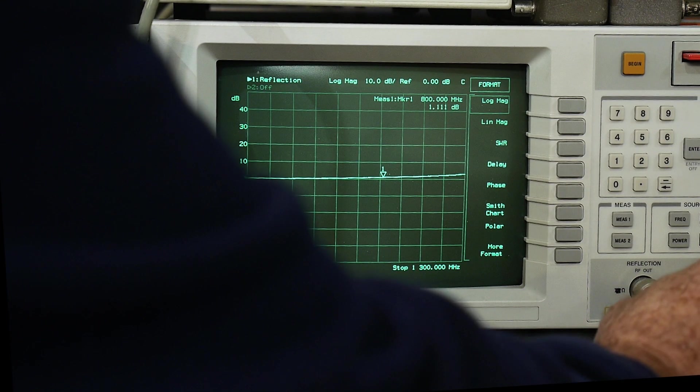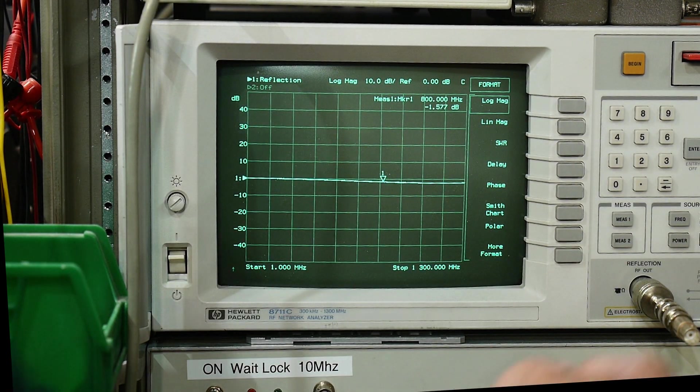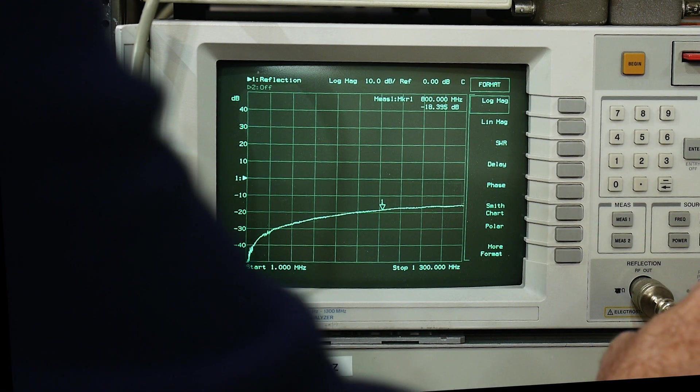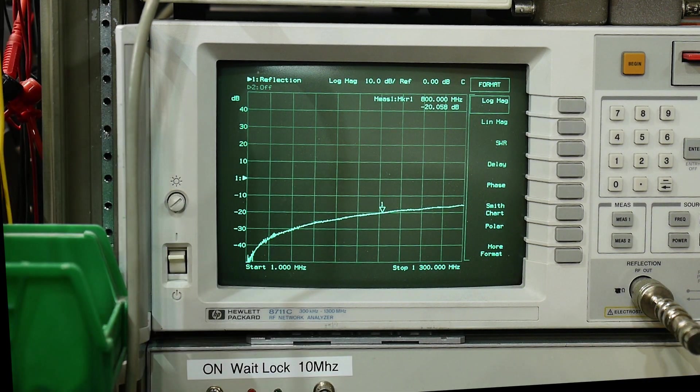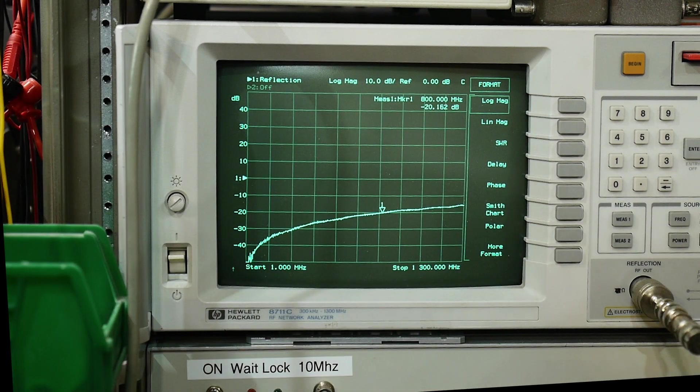we're going to use the BNC connector - is that too many BNCs? All right, let's put that on there and add the load. So at 800 megahertz, we're about minus 20 dB of return loss, not too bad.